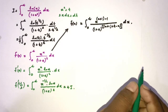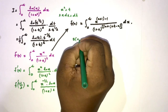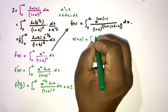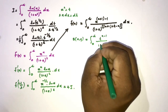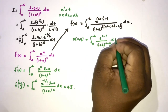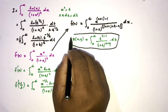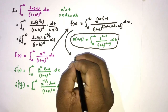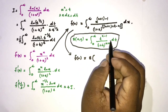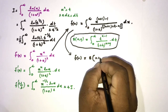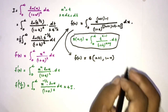This is the beta function form. We know that beta(x, y) equals the integral from 0 to infinity of t to the x minus 1 over (1+t) to the x plus y, dt. Applying this definition, f(n) equals beta(n+1, 1−n).